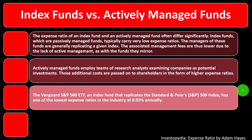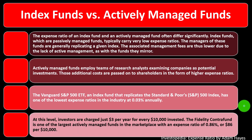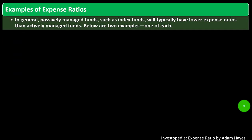The Vanguard S&P 500 ETF, an index fund that replicates the S&P 500, has one of the lowest expense ratios in the industry at 0.03% annually — that's just $3 per year for every $10,000 invested. The Fidelity Contra Fund is one of the largest actively managed funds in the marketplace, with an average expense ratio of 0.86%, or $86 per $10,000 invested.